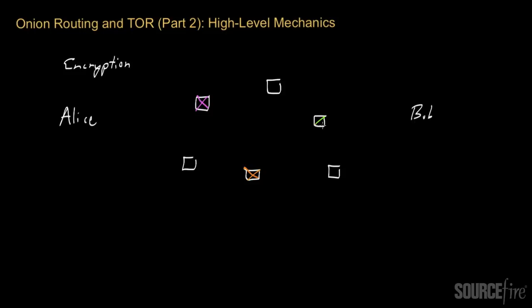Actually, to be a bit more precise, Alice is not doing this. Alice's computer is doing all this work. She's typically going to have some software on her computer that handles all of the underlying mechanics here. What is going to happen is that Alice's computer is going to, in succession, negotiate shared cryptographic keys with these three TOR nodes.